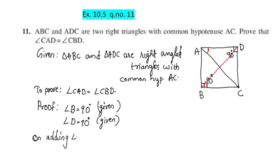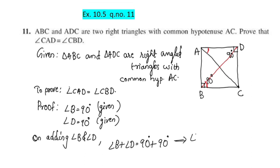Looking at angle B and angle D: angle B plus angle D equals 90 degrees plus 90 degrees, which equals 180 degrees. So angle B plus angle D is equal to 180 degrees. These are opposite angles in the quadrilateral.